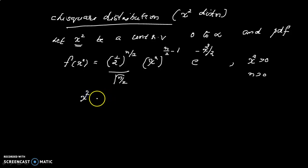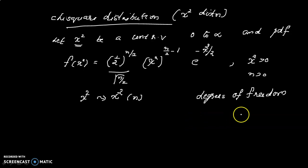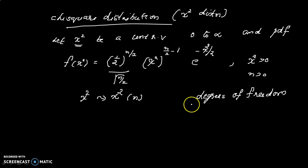This is a chi-square distribution with n degrees of freedom. Now, looking at the parameters, we consider the degrees of freedom. The degrees of freedom refers to how many independent variables we have in our samples.